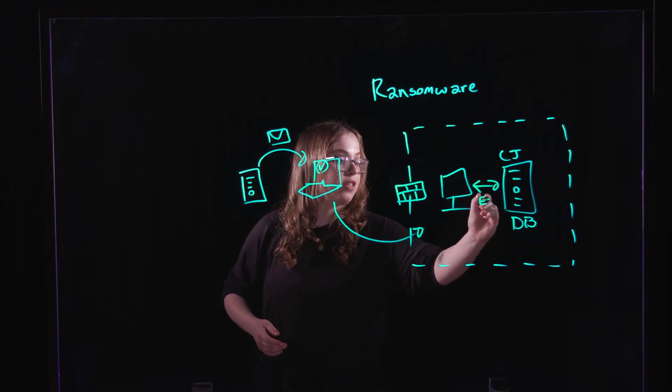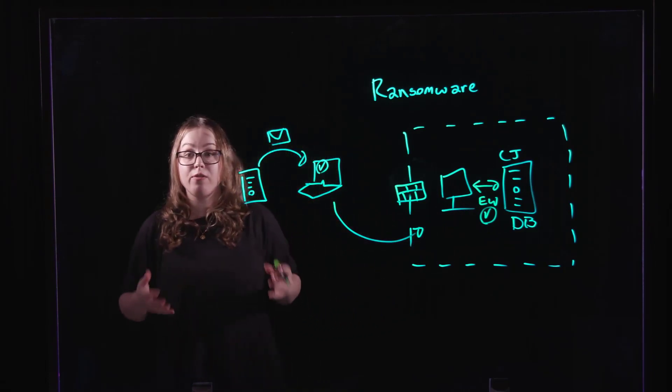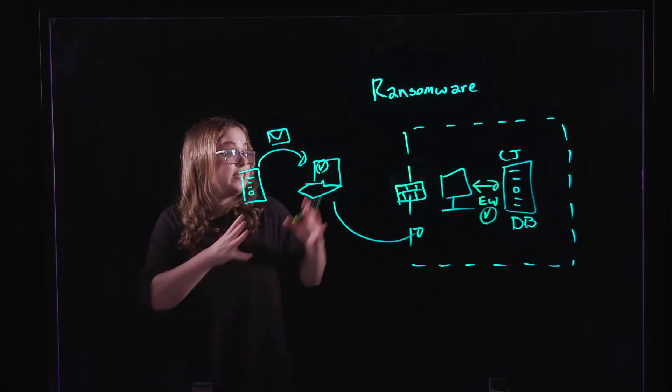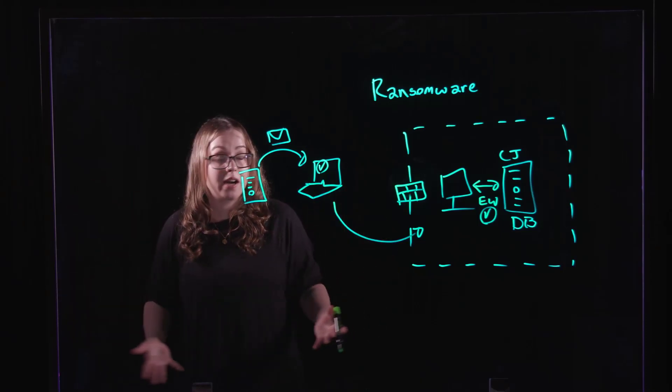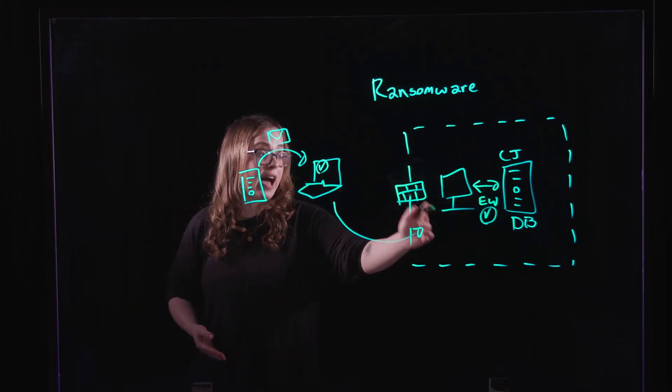We're able to secure that east-west traffic with a stateful layer 7 firewall and segment that environment so that they aren't able to move anywhere in the environment freely even if they do have that initial access.